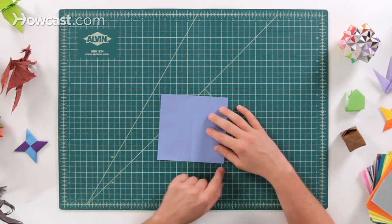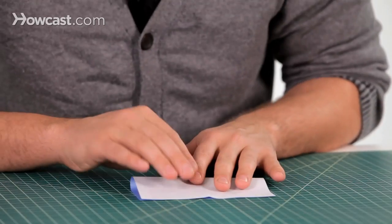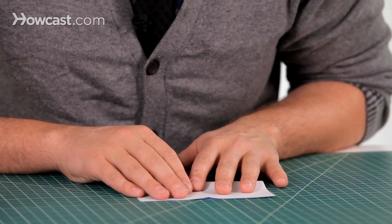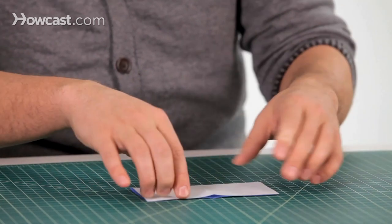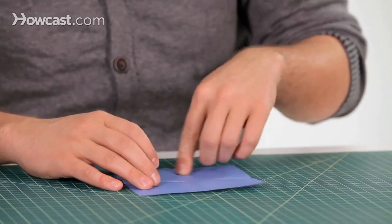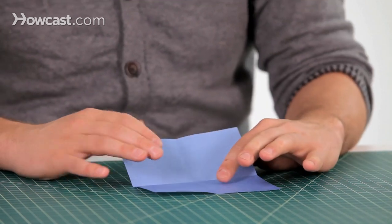Now we're going to do the other book fold as well, so go ahead and take the bottom edge on the other side and fold it up. So that's going to give us a good plus sign in the middle of the paper, we can find out exactly where the middle of the paper is.